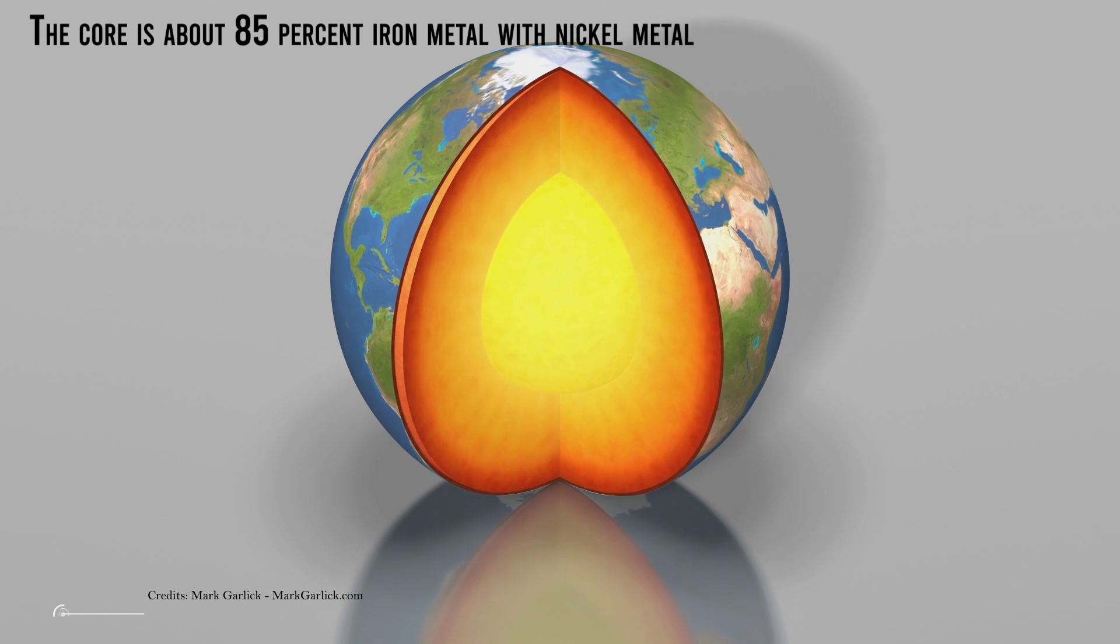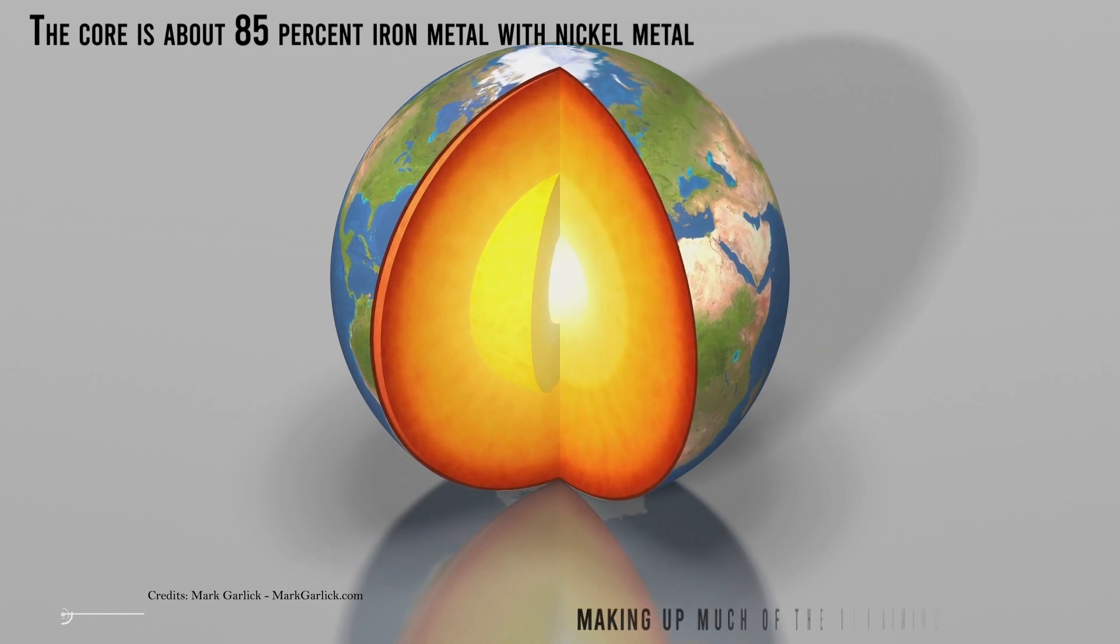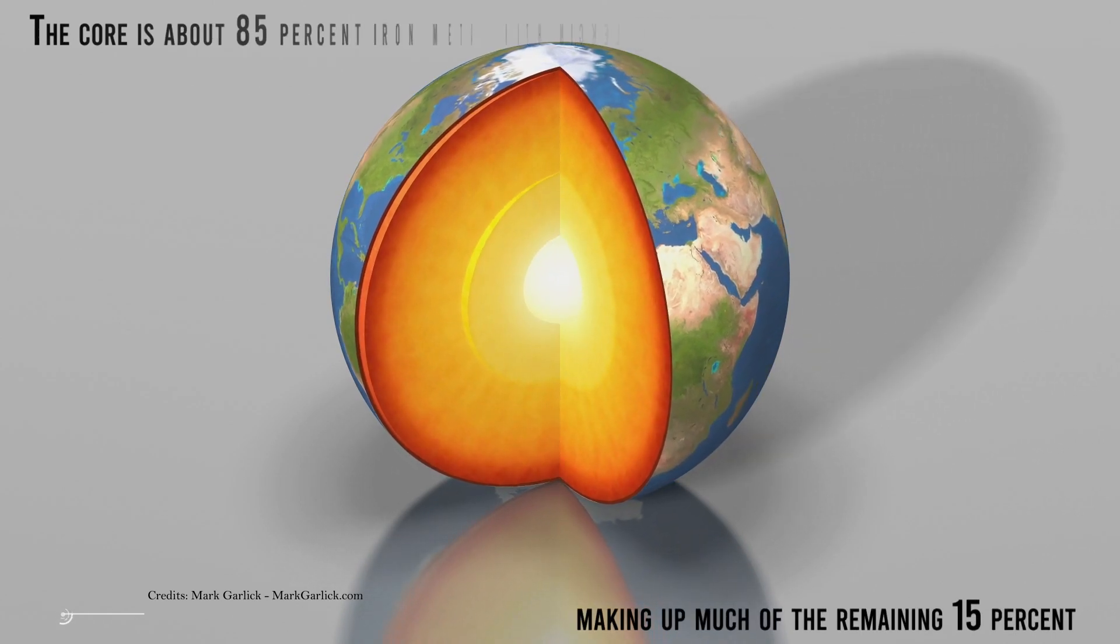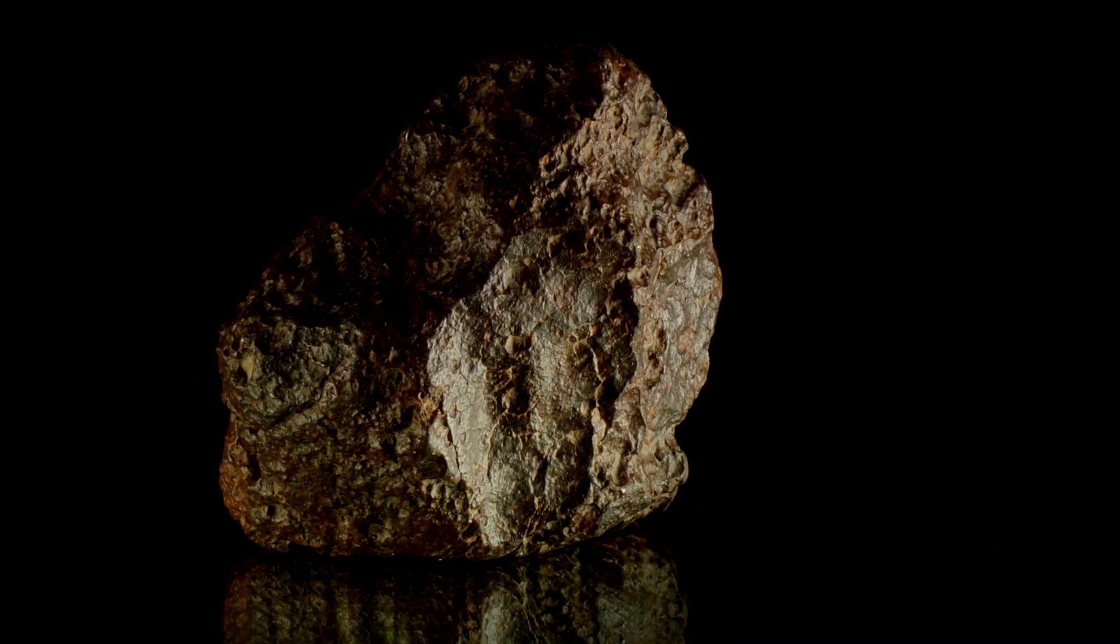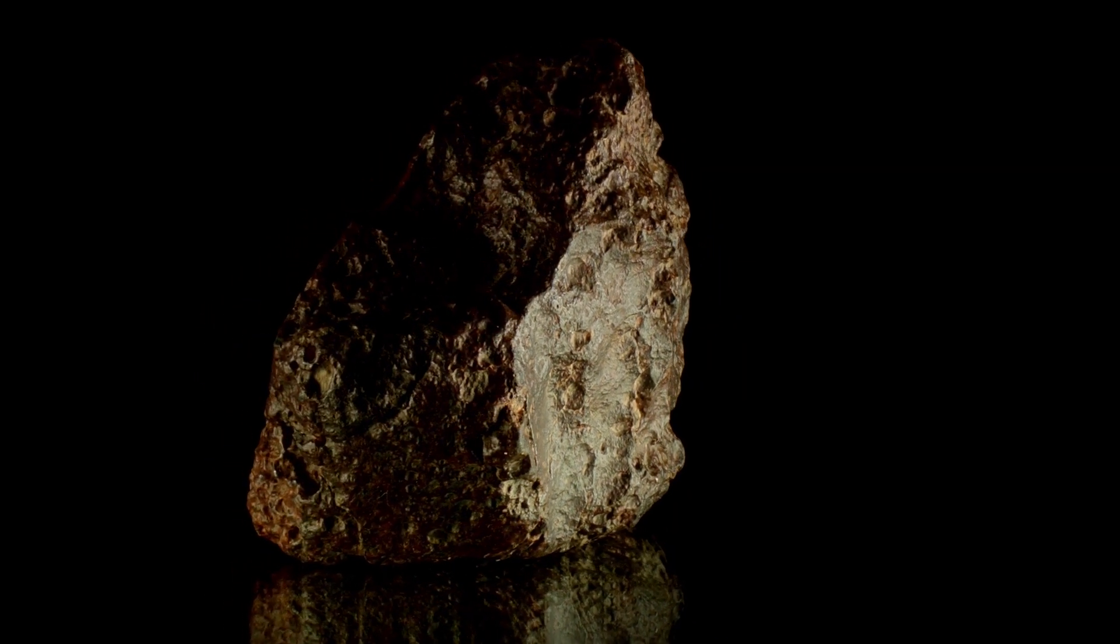Calculations indicate that the core is about 85% iron metal, with nickel metal making up much of the remaining 15%. Also metallic meteorites are thought to be representative of the core.